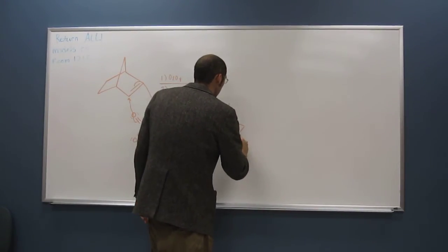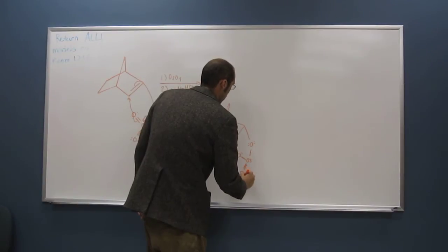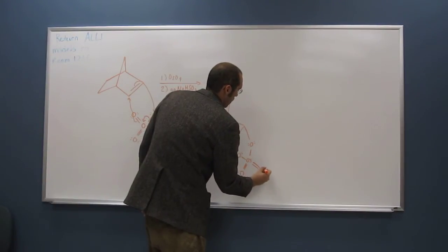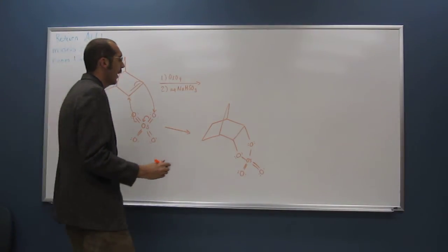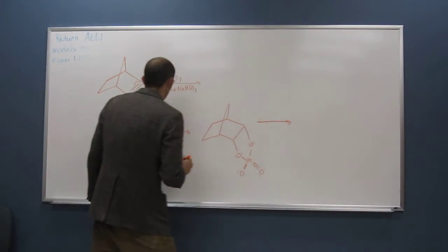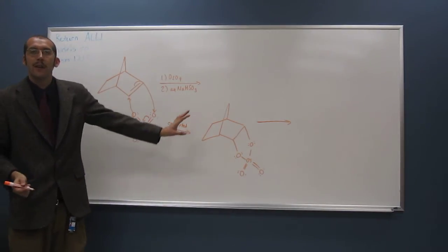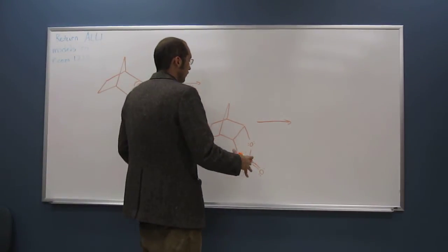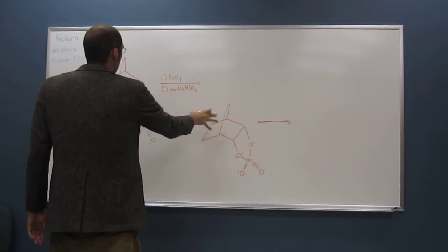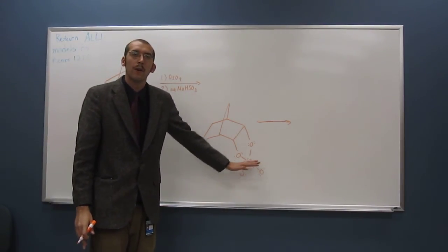Now you've got this intermediate. So again, this is concerted. And you don't need to know the second step mechanism. So this is kind of an intermediate for the reaction. And what this sodium bisulfite does is kind of reduce this osmonium intermediate.